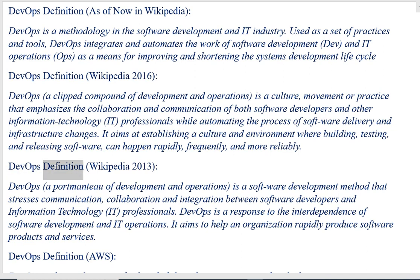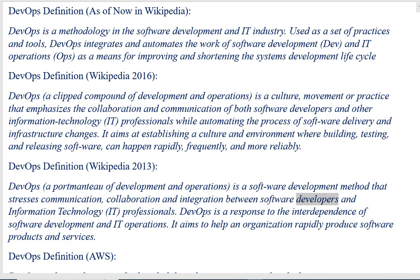DevOps definition, Wikipedia 2013: DevOps, a portmanteau of development and operations, is a software development method that stresses communication, collaboration and integration between software developers and information technology professionals. DevOps is a response to the interdependence of software development and IT operations. It aims to help an organization rapidly produce software products and services.